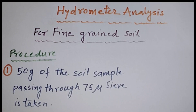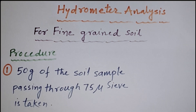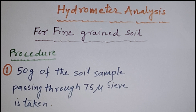Good morning students. Today we will learn about hydrometer method or hydrometer analysis. This is applicable for fine grain soil. Fine grain soils have more than 50 percent material passing the 75 microns sieve. Fine soils are those which pass through 75 microns, since the finest sieve size used in sieve analysis is 75 microns.